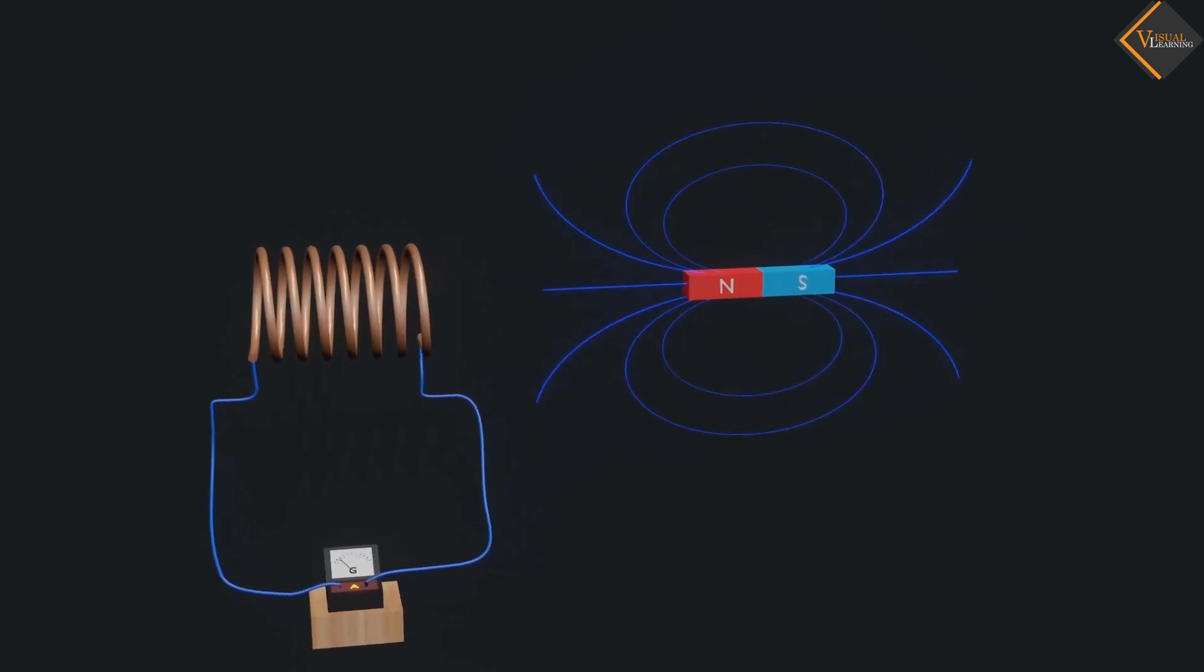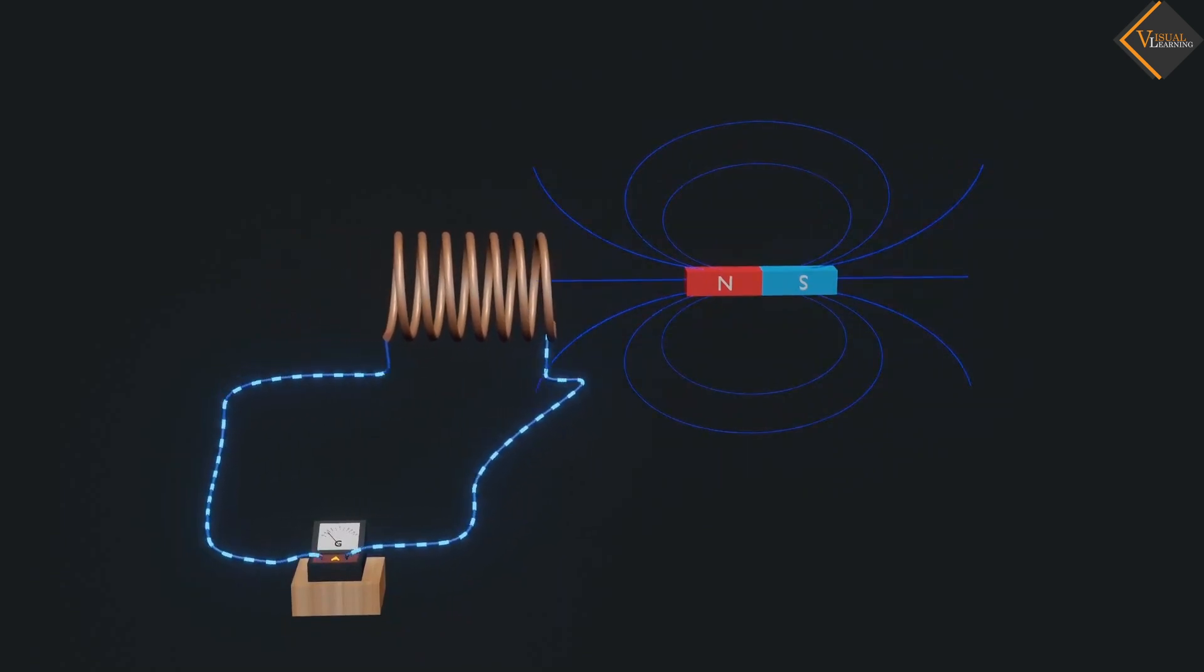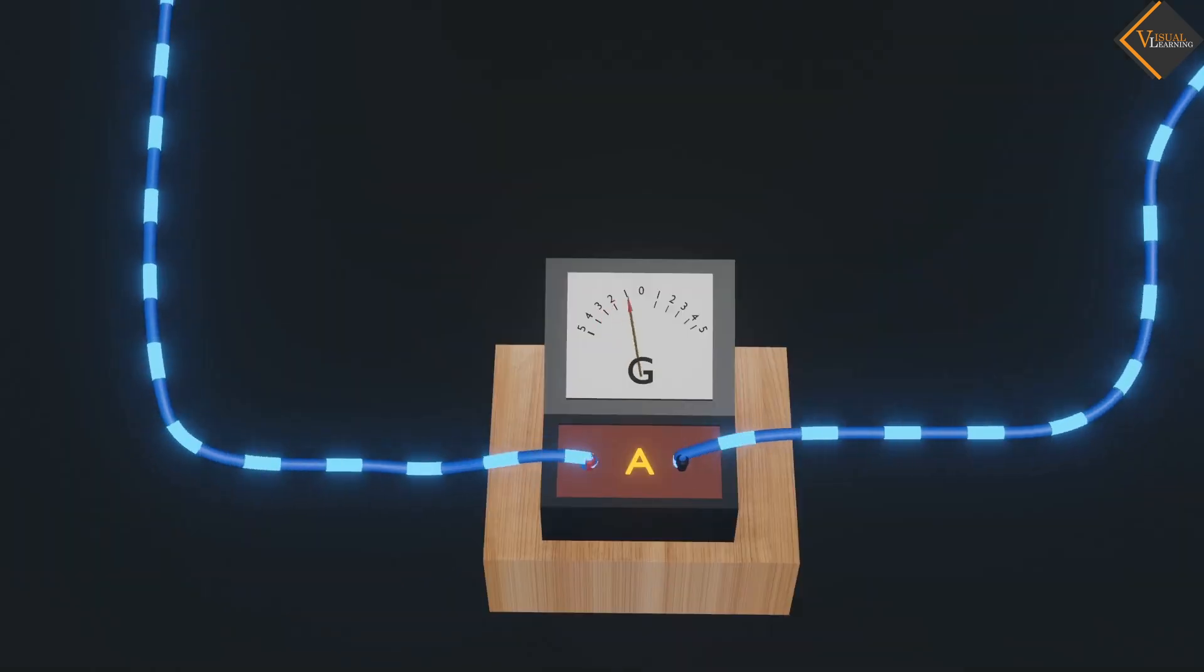Move the coil towards the north pole of the bar magnet. We see that the galvanometer needle deflects toward the right.